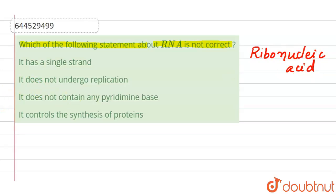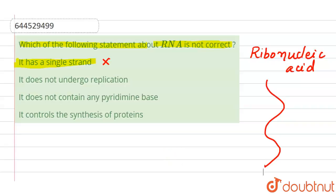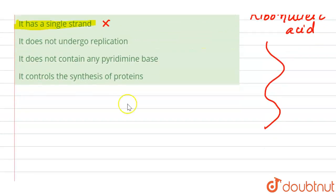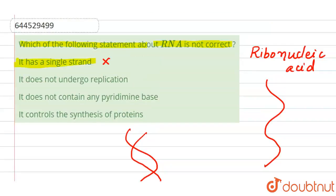Looking at the first statement — RNA has a single strand. Yes, this statement is correct, so it will not be our answer. The single strand structure is present in RNA, while the double strand helical structure is present in DNA. So the first statement is correct, and we have to find the incorrect statement.